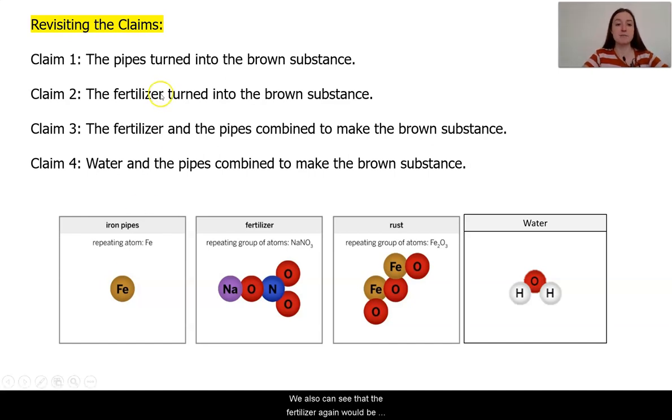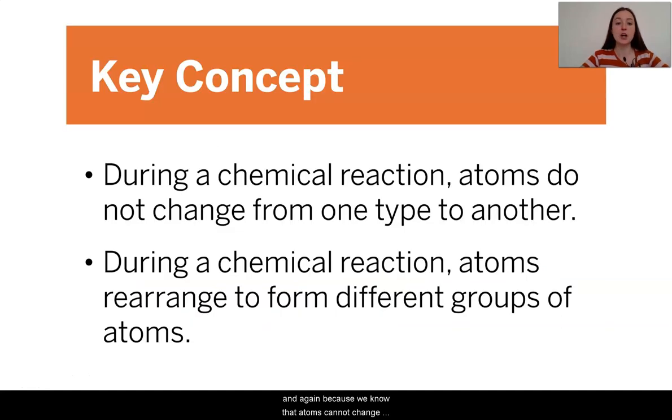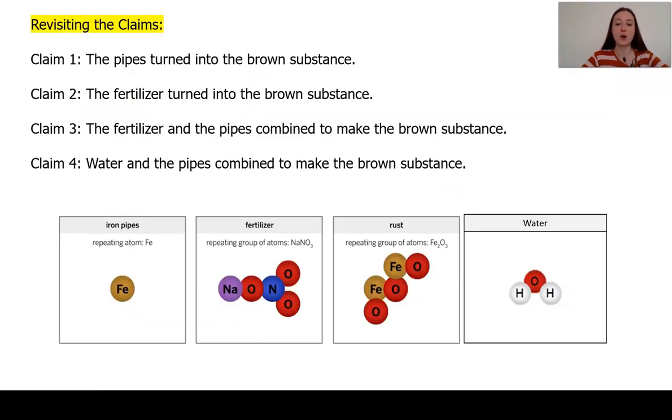We also can see that the fertilizer again would be multiple molecules of fertilizer bouncing around and bumping into each other. Now these two atoms could have fallen off and broken apart, but I still do not see any iron atoms in here for that reattachment and rearrangement to happen. And again, because we know that atoms cannot change into another type of atom during a chemical reaction, it also makes it unlikely that this claim is true.